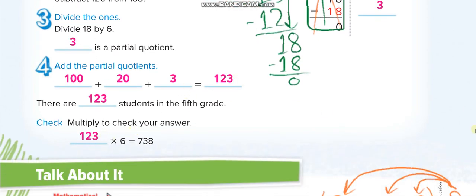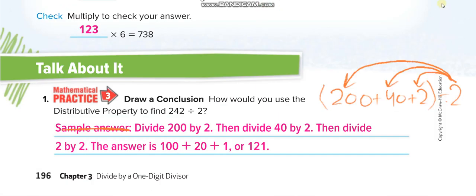This is how they check their answers. Draw a conclusion: how would you use the distributive property to find 242 divided by 2? We break 242 into parts: 240 and 2, then divide each by 2. So 200 divided by 2 is 100, 40 divided by 2 is 20, and 2 divided by 2 is 1. Add all of them: 121.